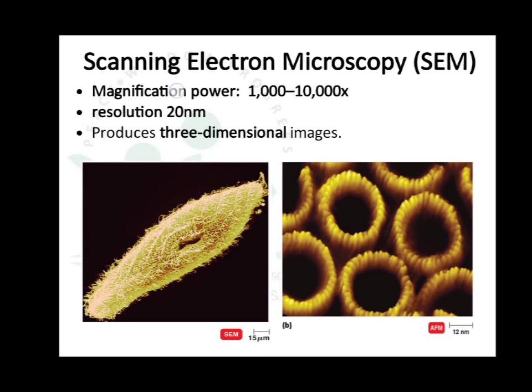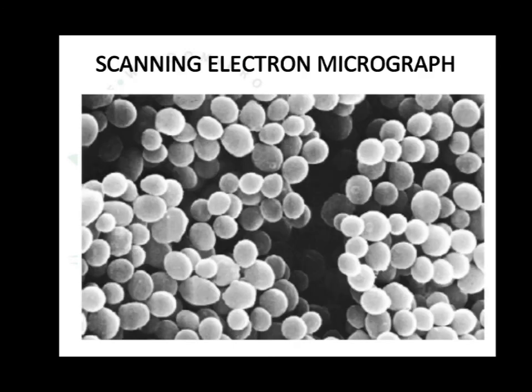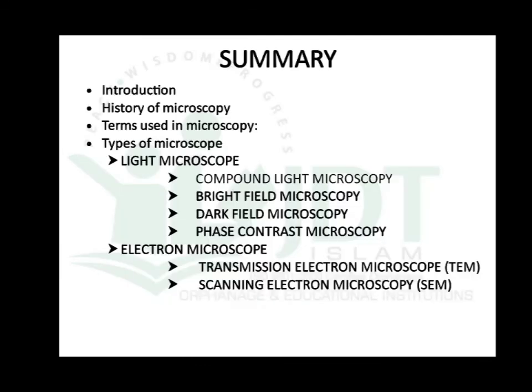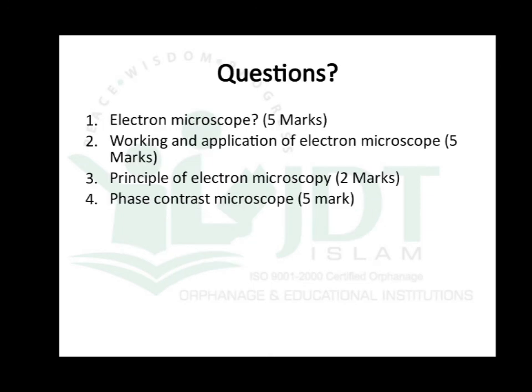The scanning electron microscope has a magnification power of 1,000 to 10,000 times and a resolution power of 20 nanometer. It can produce three-dimensional images, as shown in the examples. This covers all about microscopy, including introduction, history, terms used, and different types like electron microscopy and light microscopy.